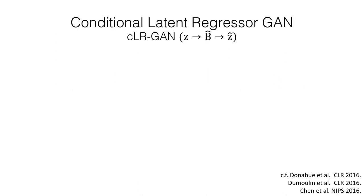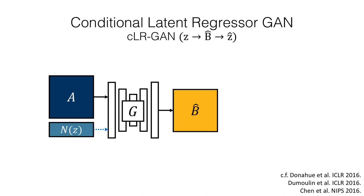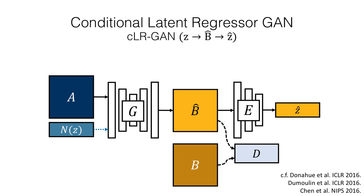On the other hand, the conditional latent regressor model starts with a randomly drawn noise vector, produces an output, and then uses an encoder to attempt to recover the original latent vector.